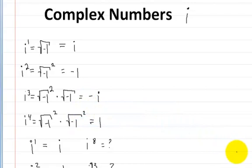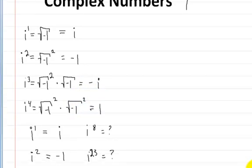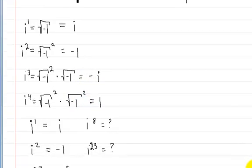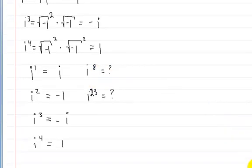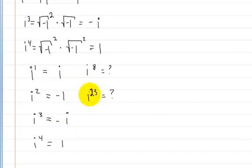The nice thing about these is that they allow you to use multiples. So let me show you how to use them to simplify homework problems. To summarize: i to the first is i, i squared is negative 1, i cubed is negative i, and i to the fourth is 1. We'll use these to solve some examples.